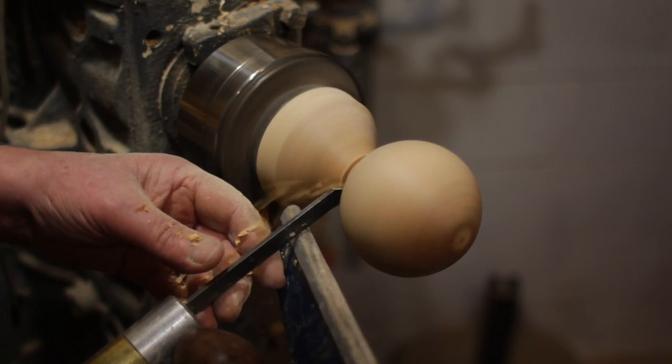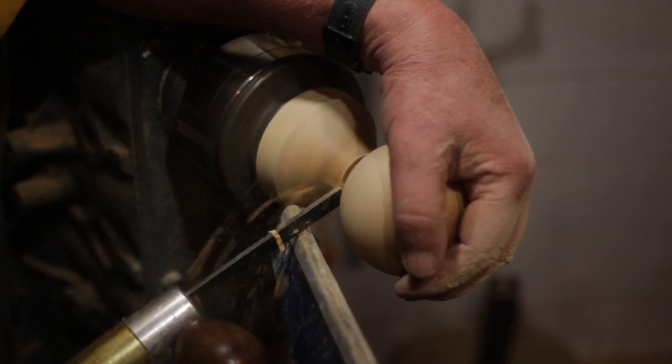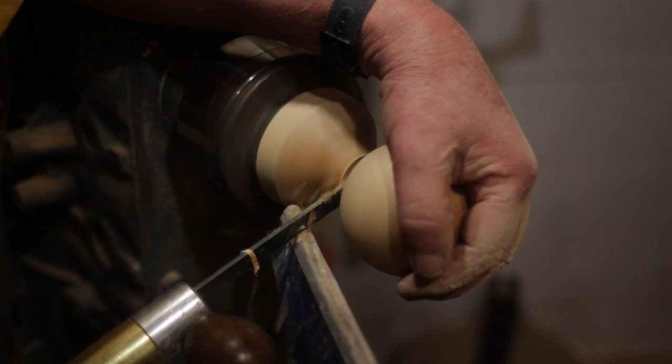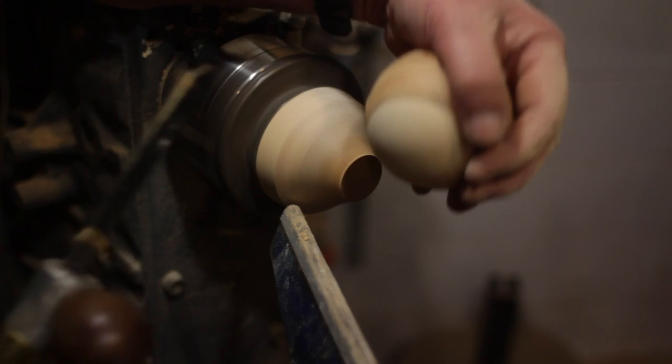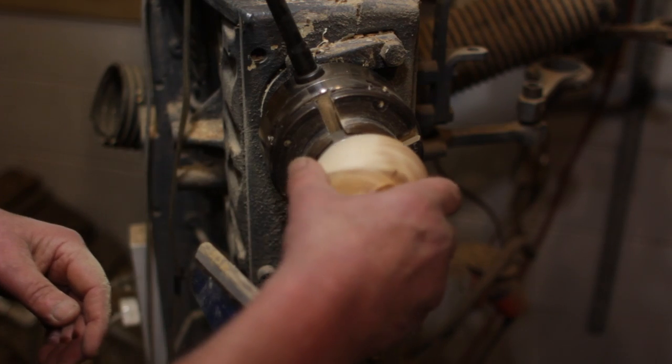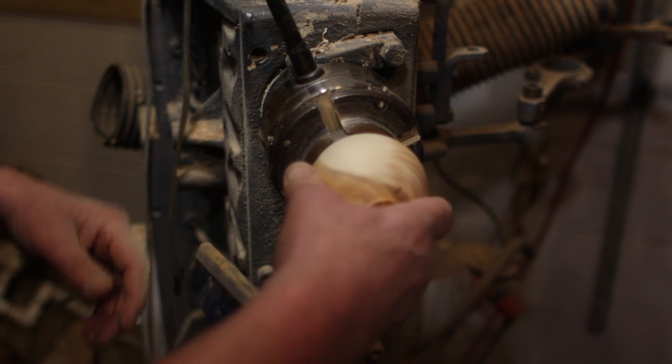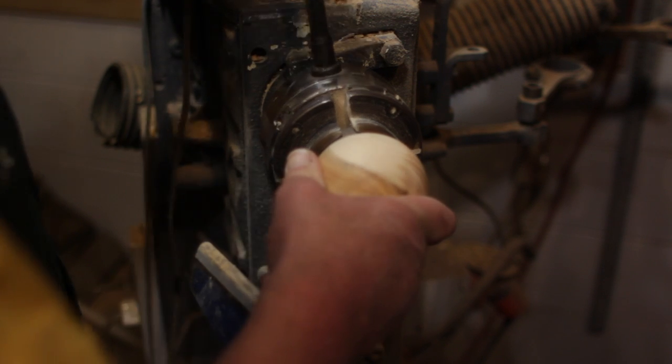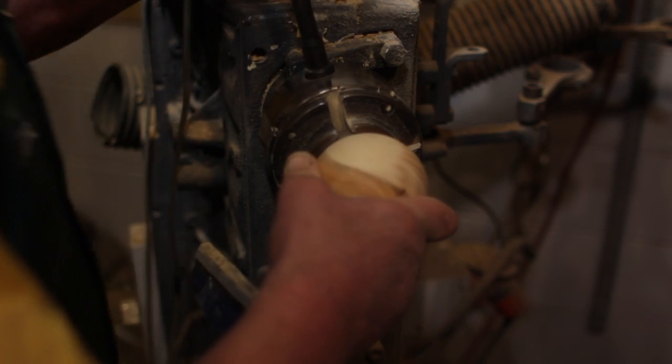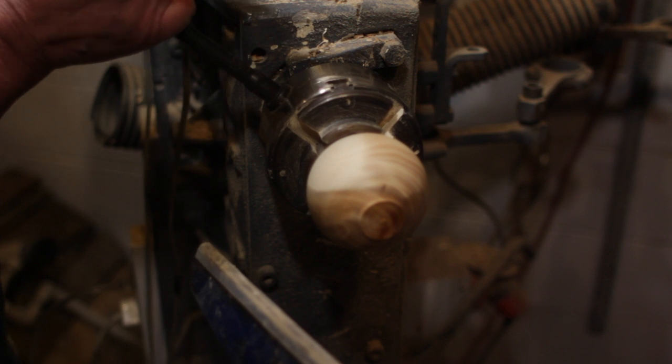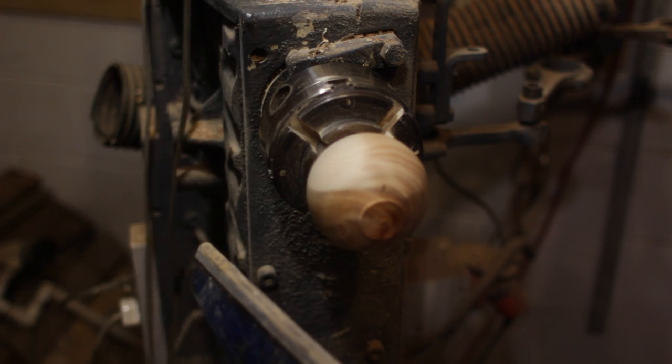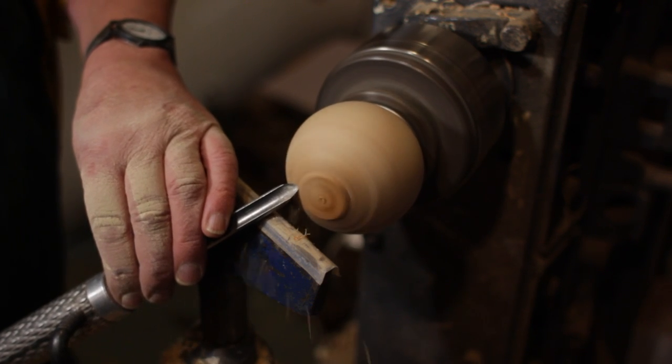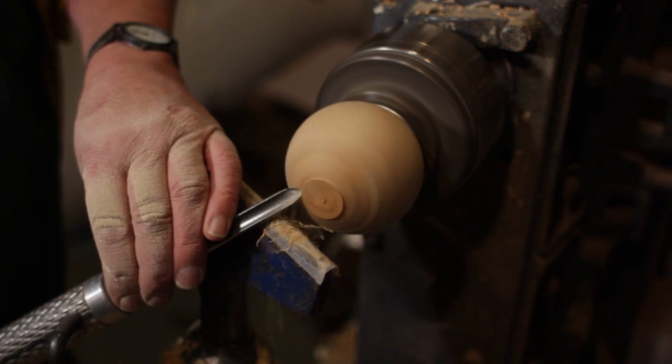You can part the sphere off and we can re-chuck that in a vacuum chuck or a jam fit chuck. In this case I am using one of my sphere collets which is very quick and easy. So now we turn off the remaining tenon.